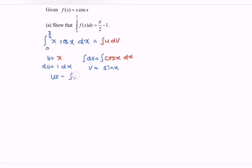Using uv minus integrate v du, substitute into the formula, so we have x sin x minus integrate sin x. We have du, which equals dx. So x sin x minus, integrate sin and we have negative cos, with the bracket from π/2 to 0.